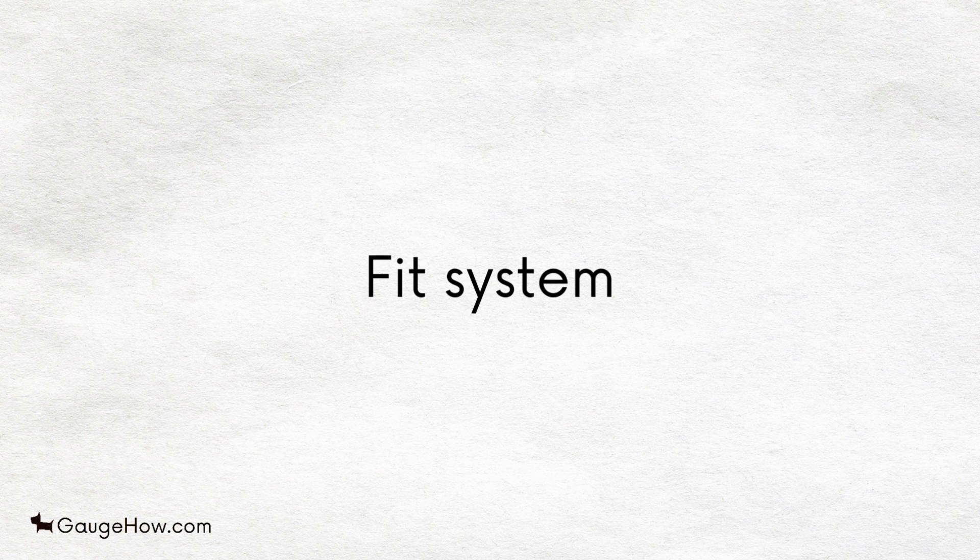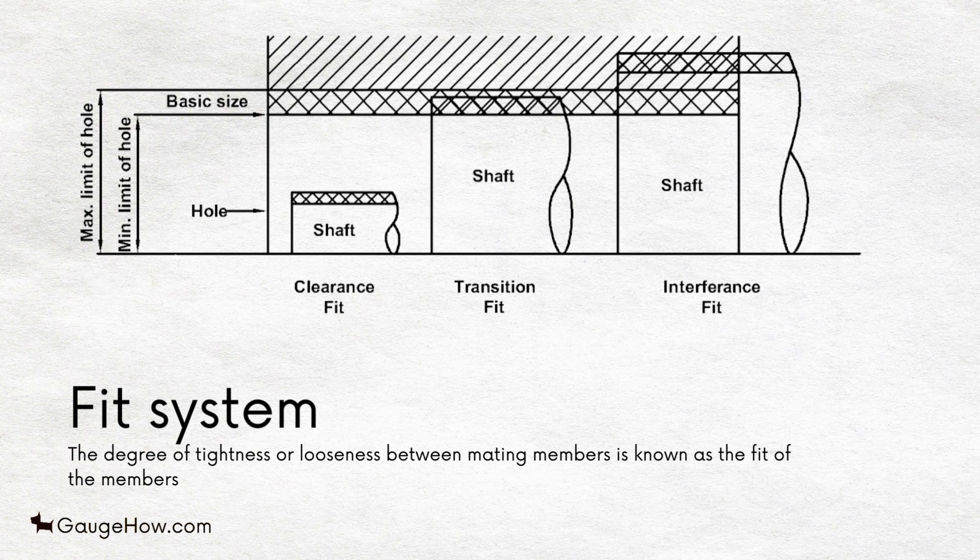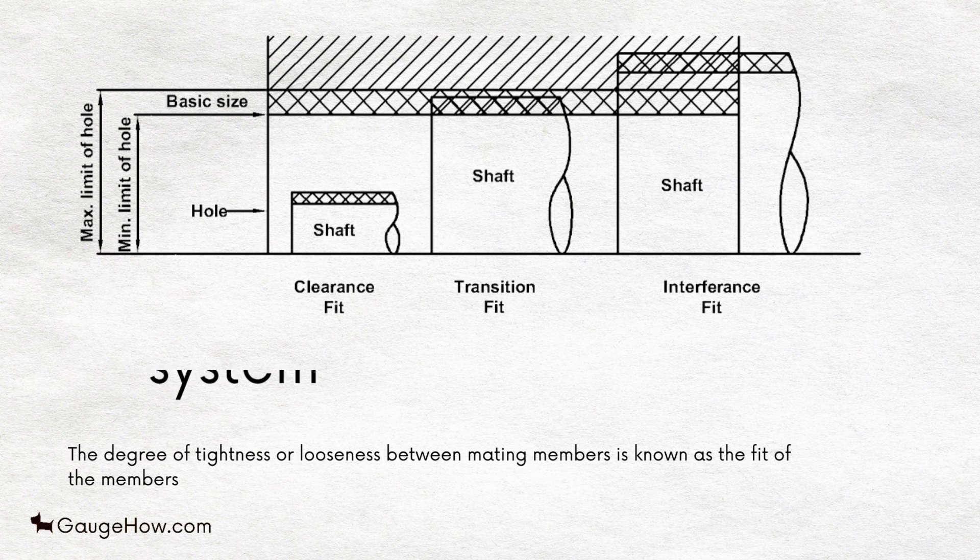Fit System. The degree of tightness or looseness between the mating members is known as the fit of the members. It depends on the actual value of the individual tolerances of the mating components. The fits can be broadly classified into three categories.